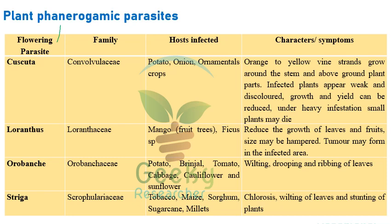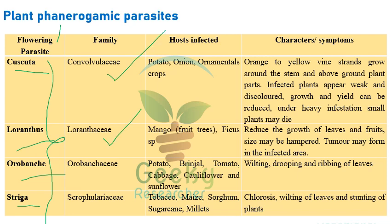The important phenyrogamic plant parasites are Cascuta, Loranthus, Orobanche (Warabanki), and Striga. Cascuta belongs to family Convolvulaceae, Loranthus to family Loranthaceae, Warabanki to family Orobanchaceae, and Striga to family Scrophulariaceae.